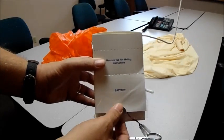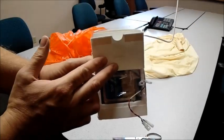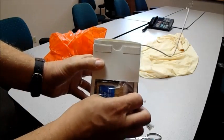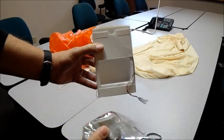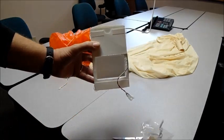The battery is located right below the remove tab for mailing instructions. Flip that up, pull that battery out and disconnect it. It will be connected with a red and black wire. Disconnect that and dispose of the battery.